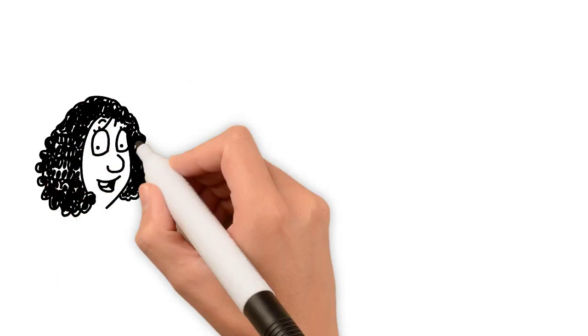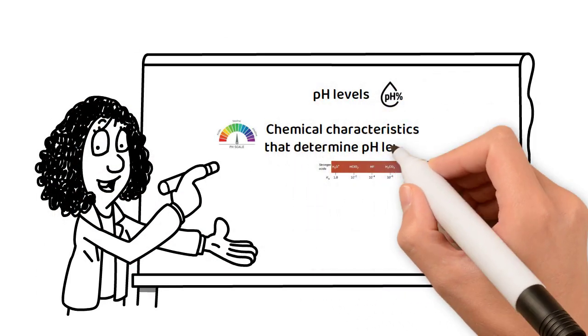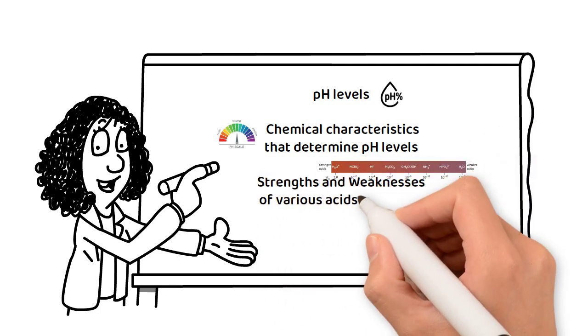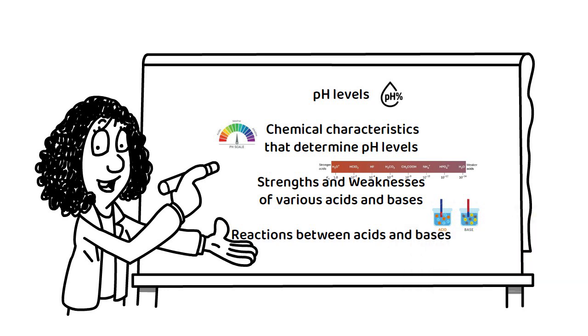In this chapter, we will explore pH levels, the chemical characteristics that determine pH levels, the strengths and weaknesses of various acids and bases, and reactions between acids and bases.